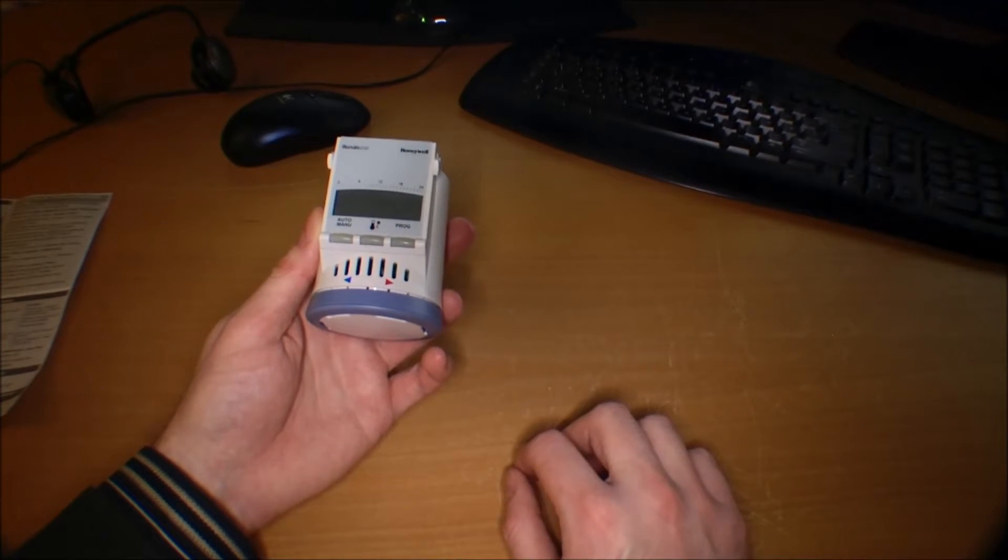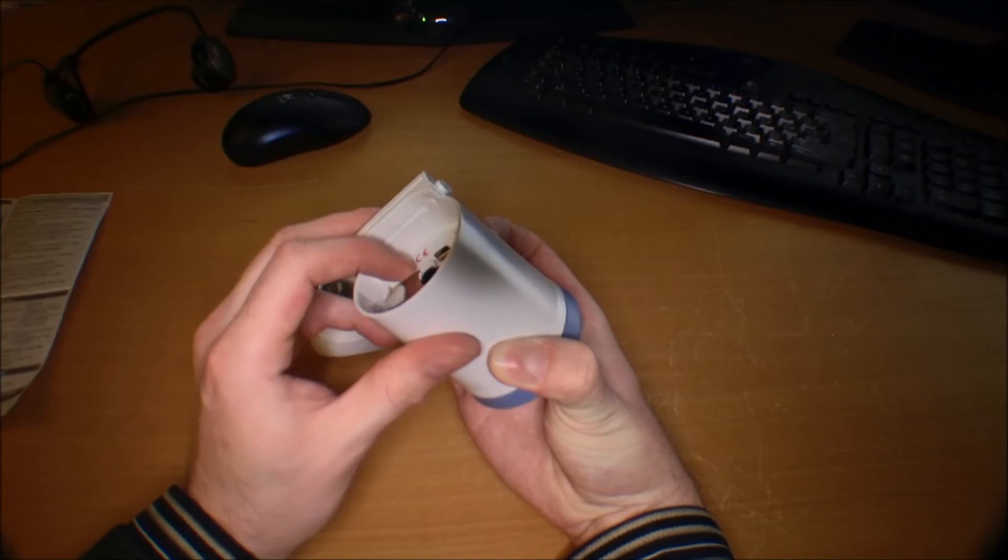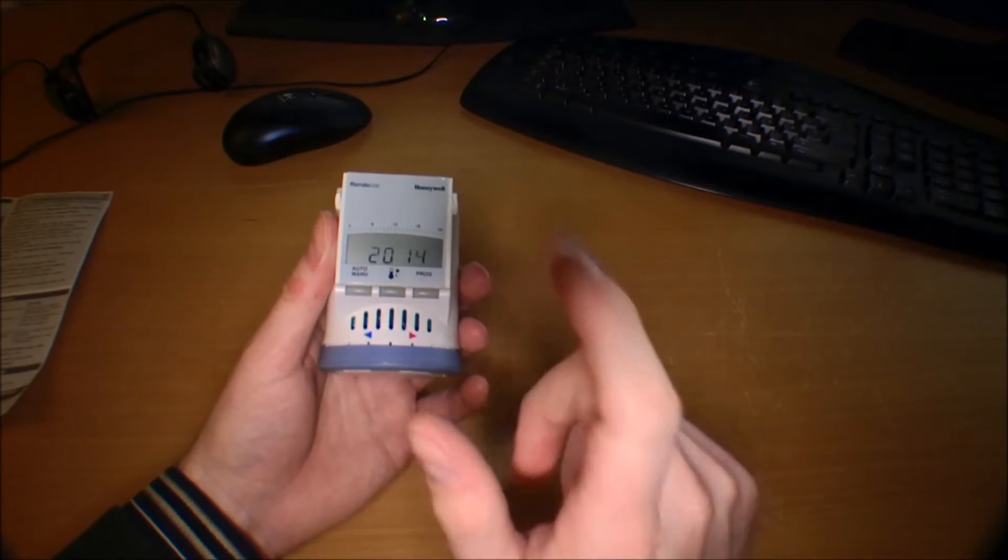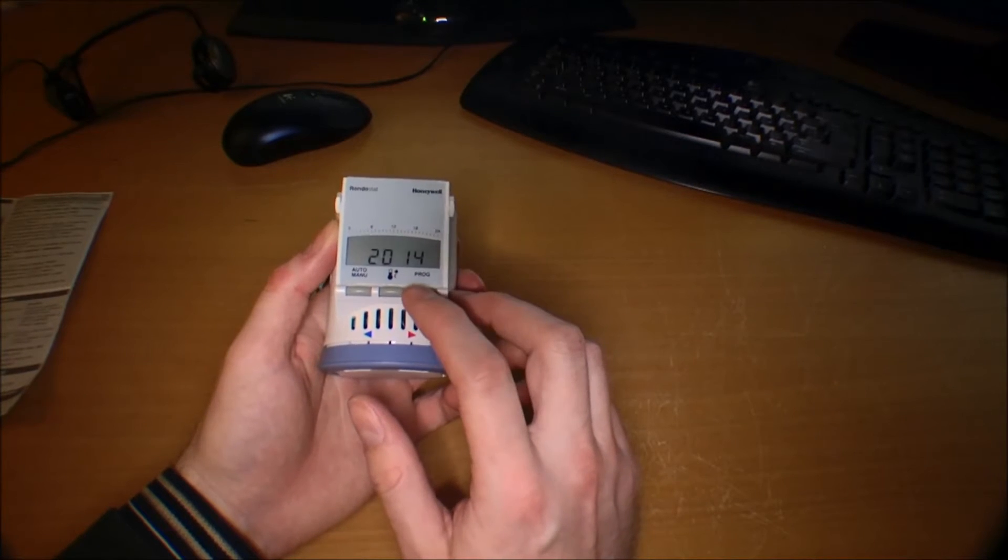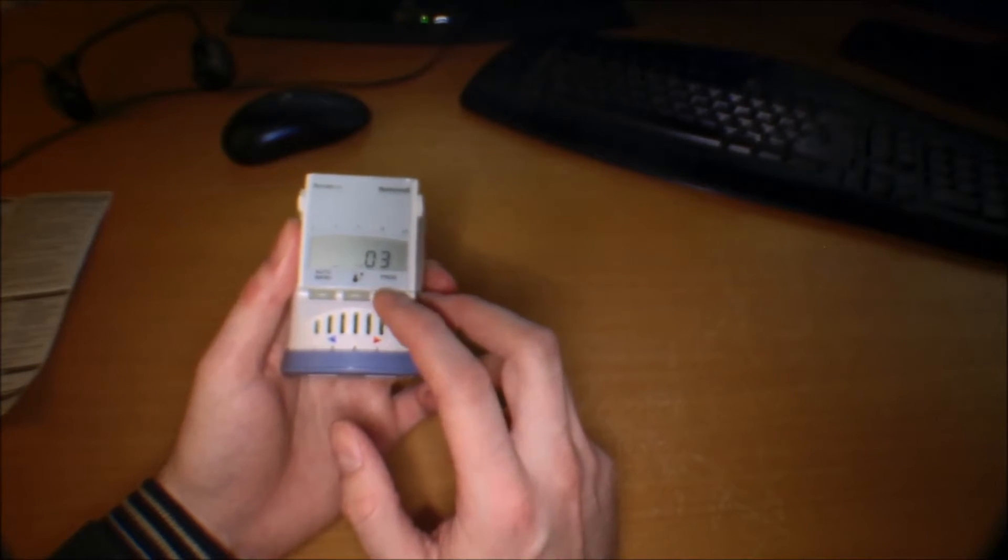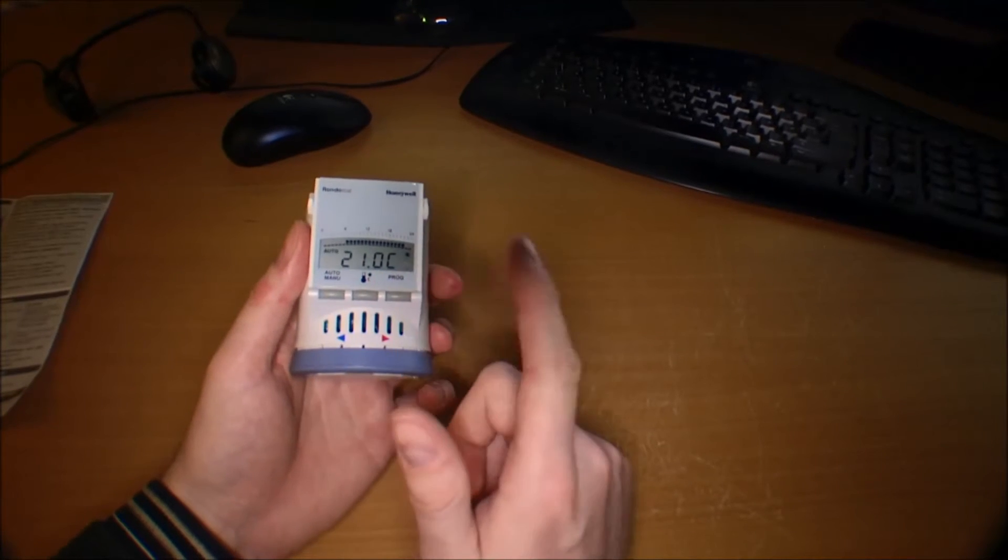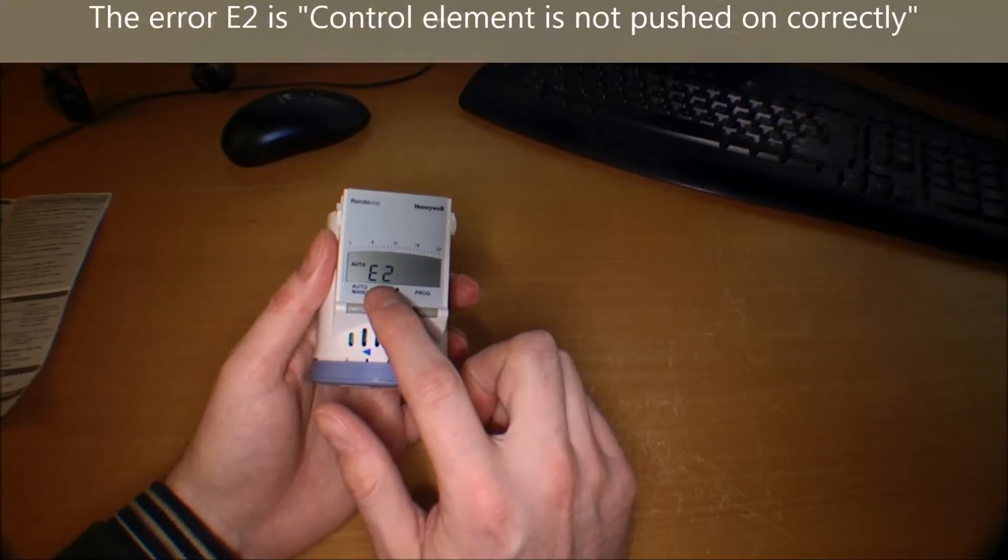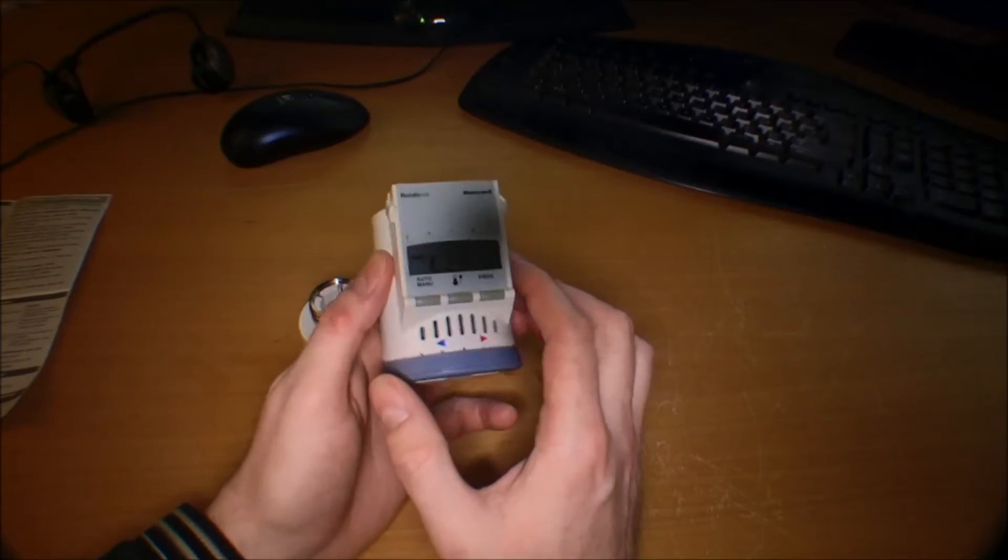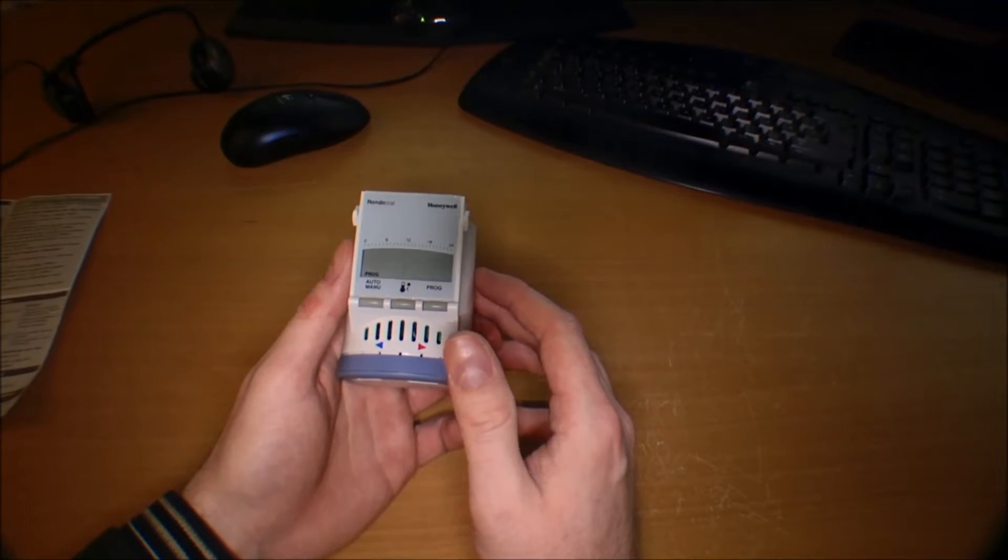To make it go back to factory default, you press the three buttons all at once and you put it back on power. It will power back up and tell you the date. Actually this is not the date, it's the firmware version. Here is the year. To approve that we press the program button and this is the date.